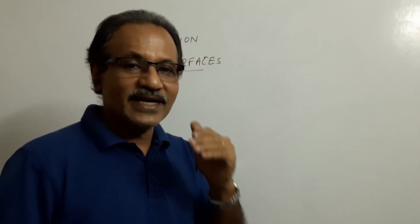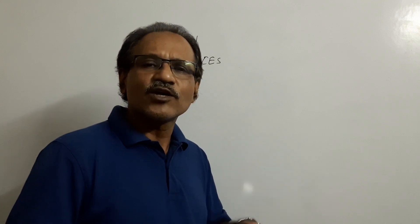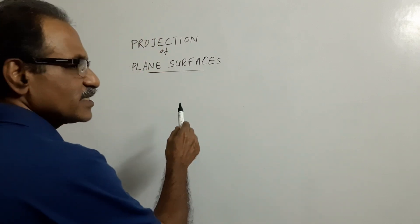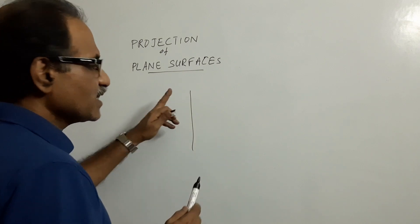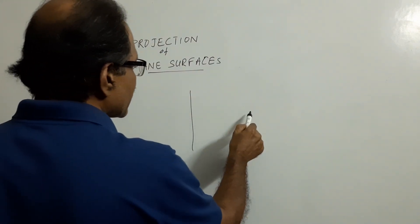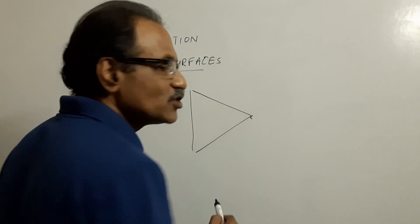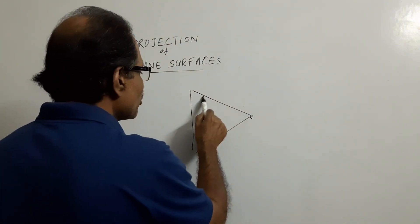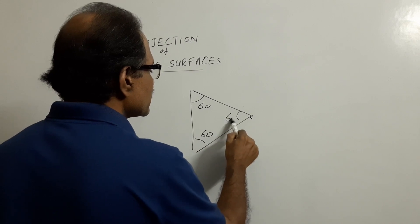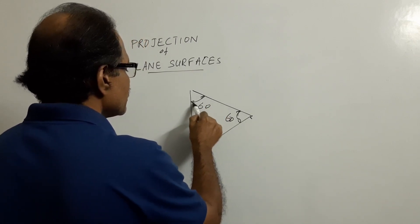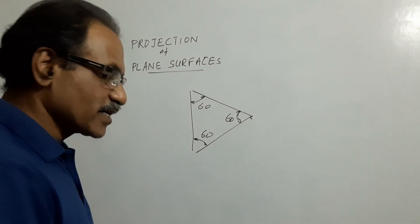How do you draw an equilateral triangle? The easiest method: draw the given side, then take the same length in your compass and cut arcs from both endpoints to get the third corner. There is no easier way. Each angle will be 60 degrees. This is the easiest way to draw an equilateral triangle.